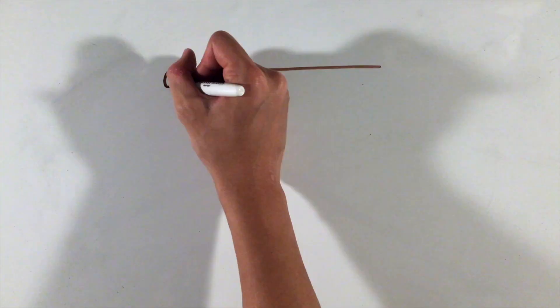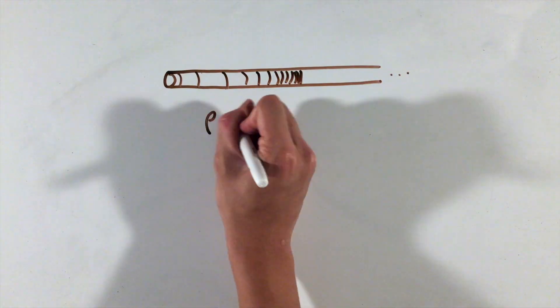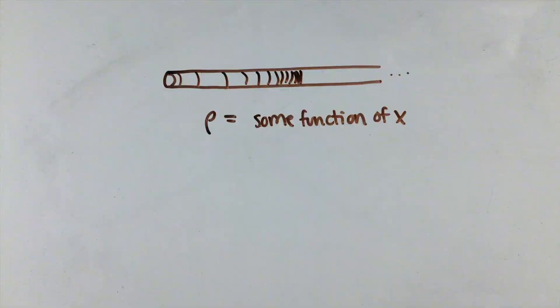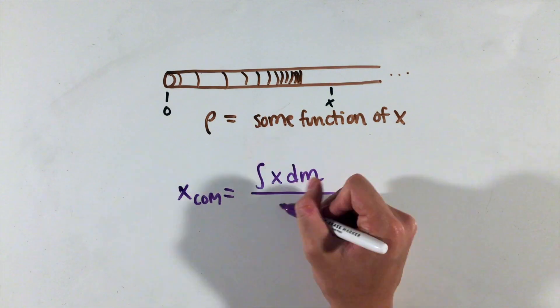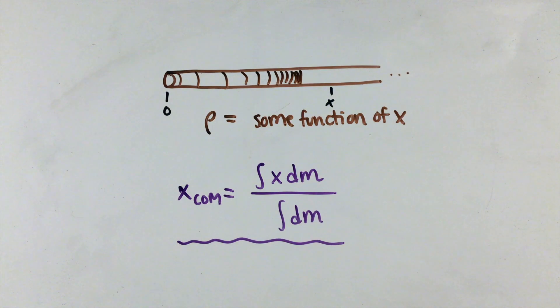Finally, for mass distributions such as a rod of varying density, the center of mass is defined as the integral of the position with respect to the infinitesimal masses, divided by the total mass of the system. The infinitesimal mass you integrate along will usually be related to the position through some density function given to you in the problem.